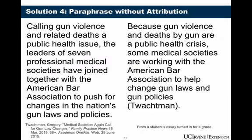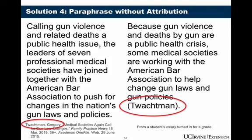And here's the fourth option. This is without attribution, so the student gives credit to the original source at the end of the sentence. This is a paraphrase, so there are no quotation marks. Notice that the grammar and vocabulary are mostly different — that makes this a paraphrase. The student used the in-text citation at the end of the sentence instead of using attribution. This is a correct way to give credit to the original source.